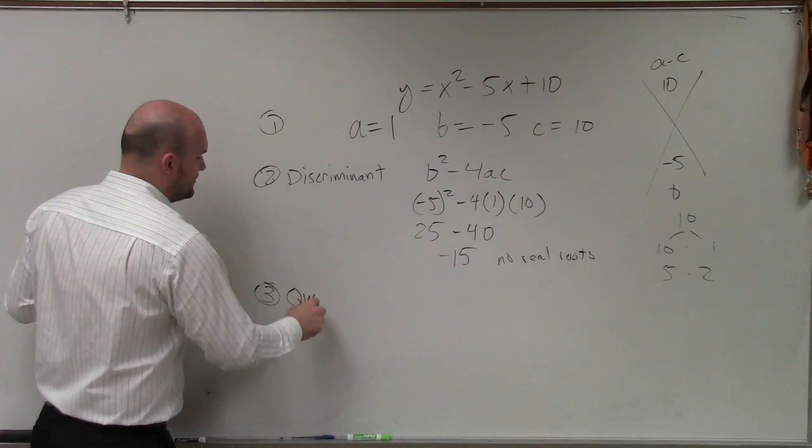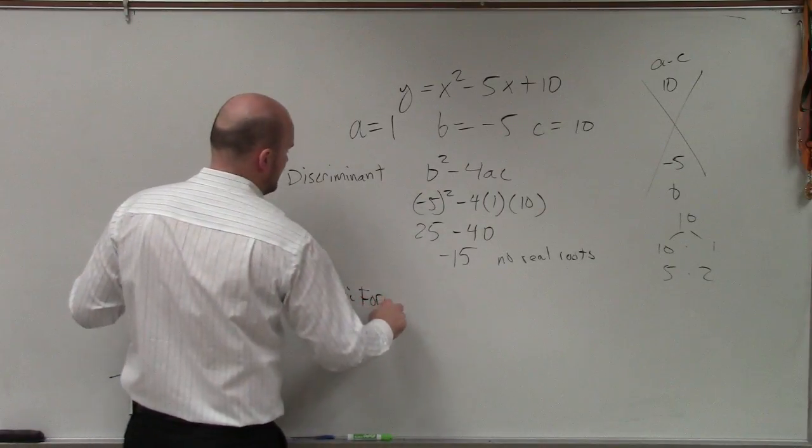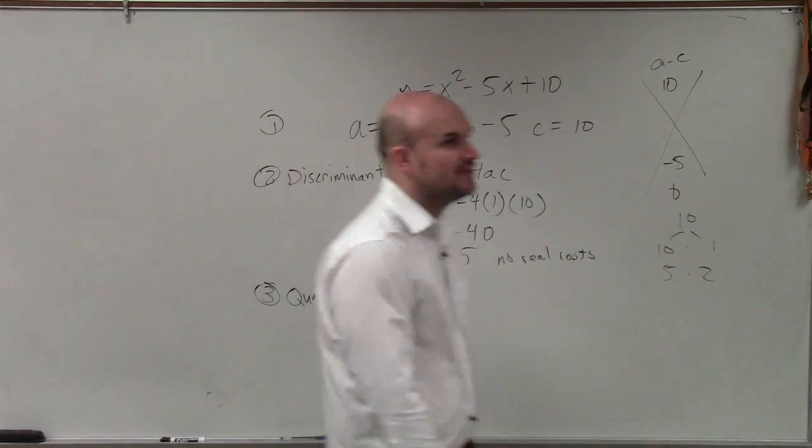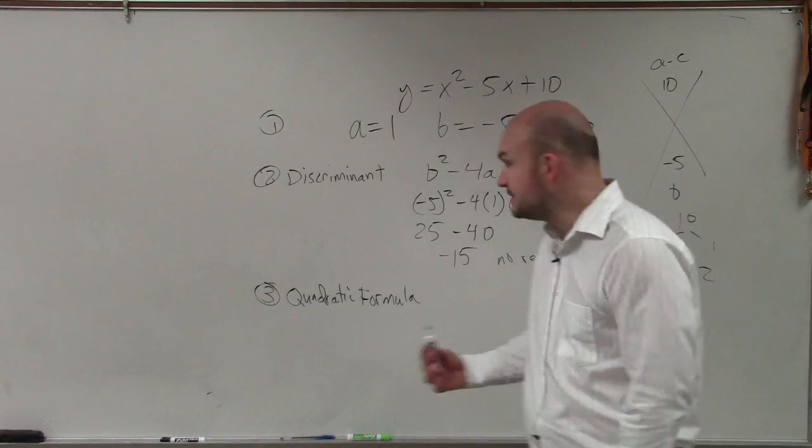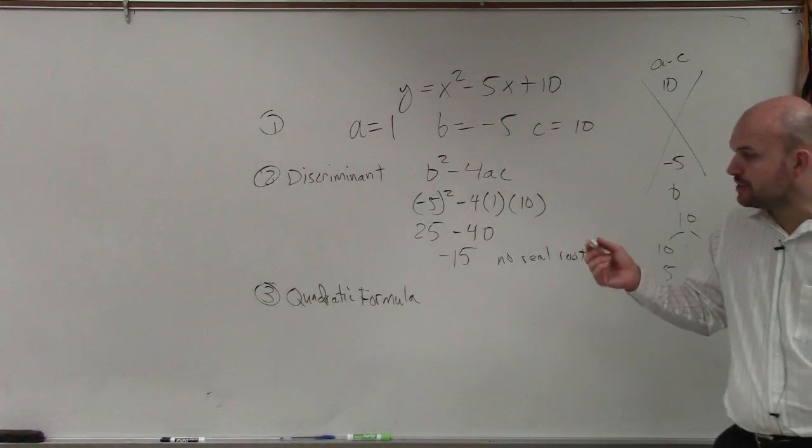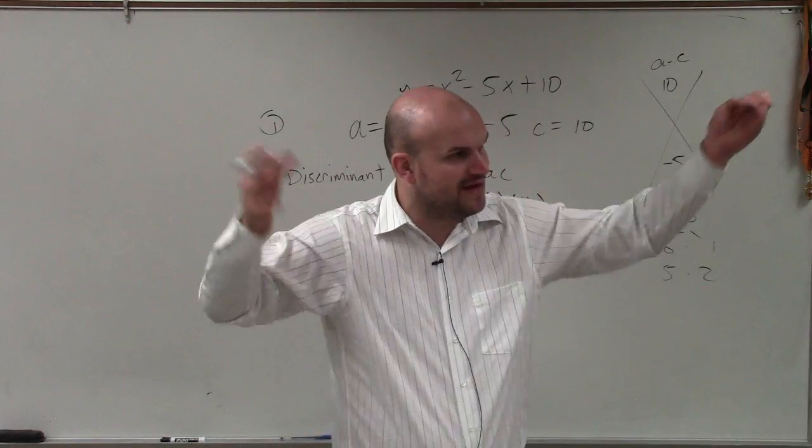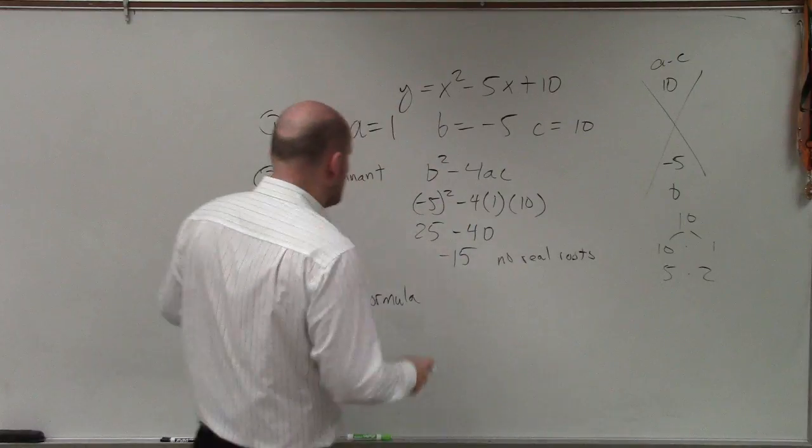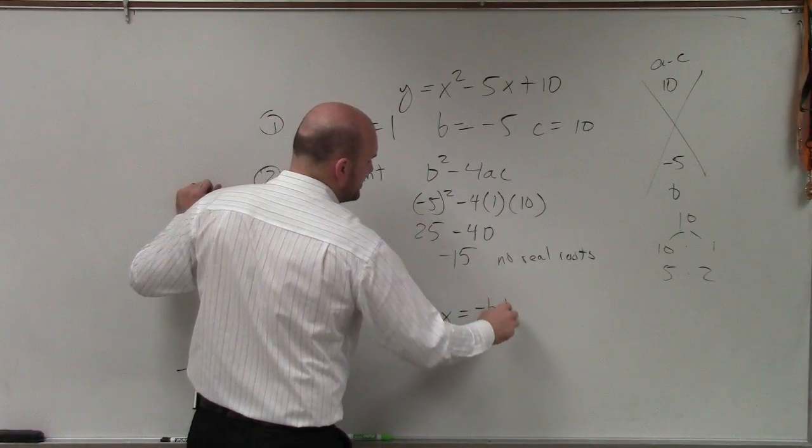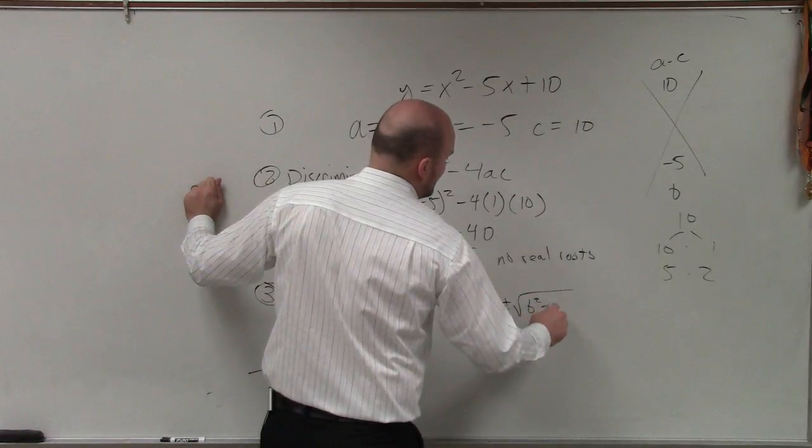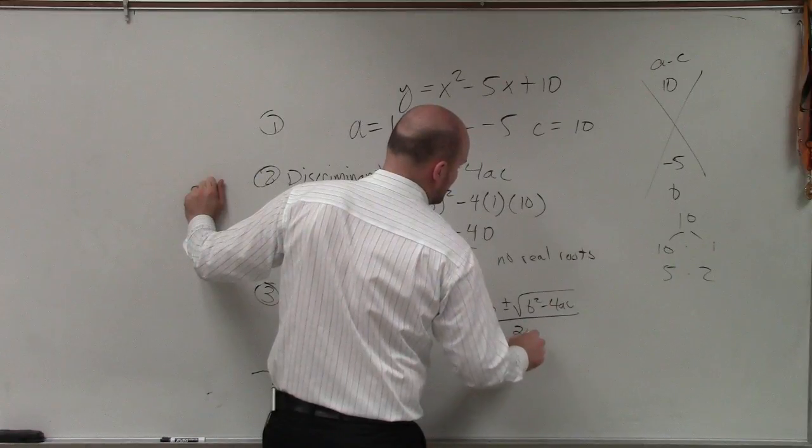So then step number three is applying the quadratic formula, which is actually the formula that we're going to be using. So to use the quadratic formula, remember, you guys, at the end when we were solving these, we got x equals, right? When we factor at the end, x equals our values. So the quadratic formula is the solutions for x, and the formula goes opposite of b plus or minus b squared minus 4 times a times c all over 2a.